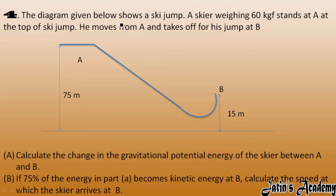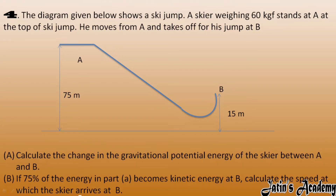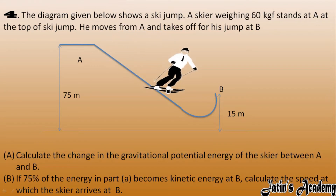The diagram given below shows a ski jump. A skier with 60 kgf stands at point A at the top of the ski jump. He moves from point A and takes off from point B. We have to calculate the change in the gravitational potential energy of the skier between A and B, and also the velocity at point B if 75% of the energy becomes kinetic energy at point B.